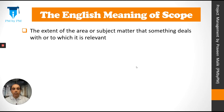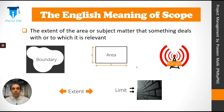So what is scope? What is the English meaning of scope? The definition is: the extent of the area or subject matter that something deals with, or to which it is relevant. There are a few words that signify scope — these are boundary, area, range, extent, and limit. If you understand these words, you'll understand the meaning of scope.